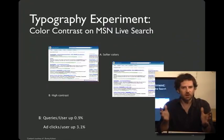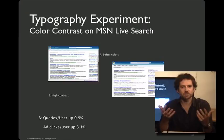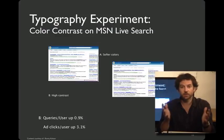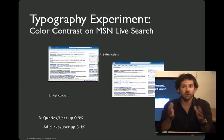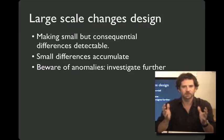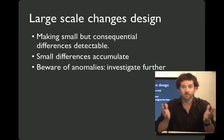You may not even notice the difference at all. However, this difference, which is below your conscious level, increases the number of queries per user by 0.9%, and the number of ad clicks per user increases 3%. At the scale that Microsoft and the other large search players operate, this is a huge change. And I think it's a nice example of how, in general, the giant scale of experiments that you can conduct on the web makes small but consequential differences detectable.